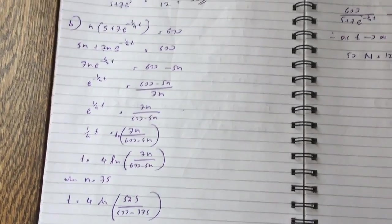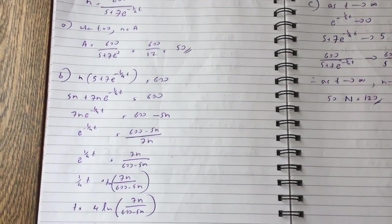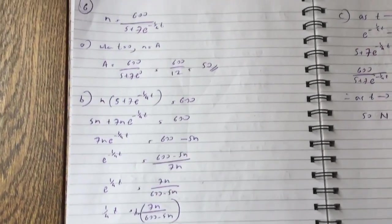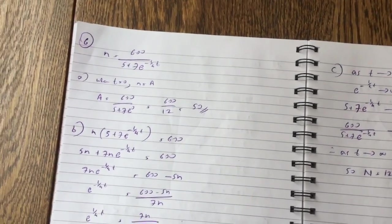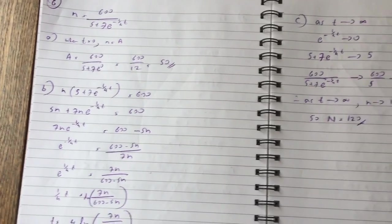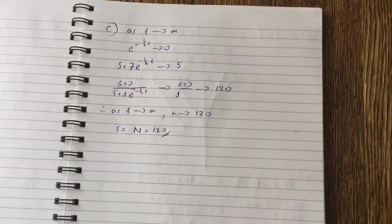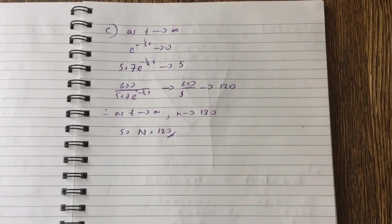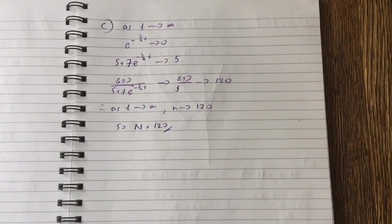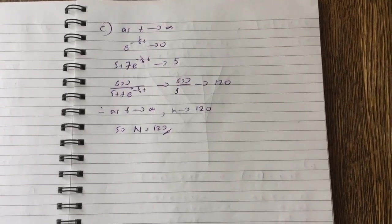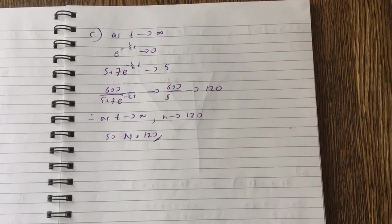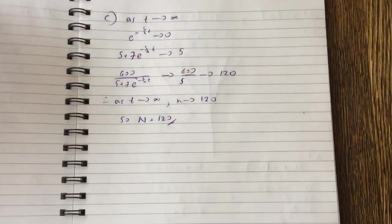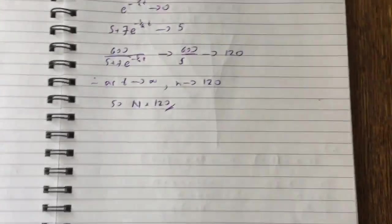I prefer to rearrange first and then substitute the number in. Part c: as t → ∞, e^(−t/4) → 0, so 5 + 7e^(−t/4) → 5, and therefore 600/(5 + 7e^(−t/4)) → 600/5 = 120. So as t → ∞, N → 120, meaning the limiting value N = 120.